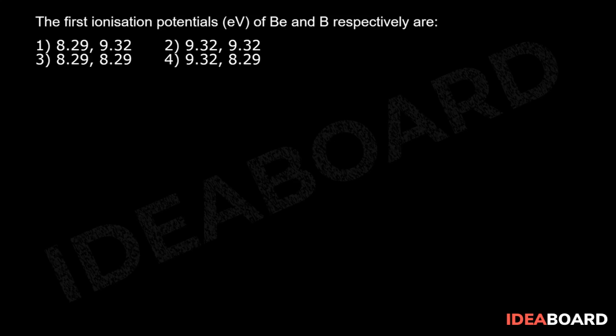The question is: the first ionization potentials in electron volts of beryllium and boron respectively are? When it comes to ionization potential, we know that ionization potential for beryllium is slightly greater than ionization potential of boron because